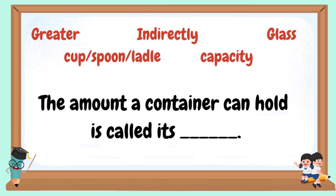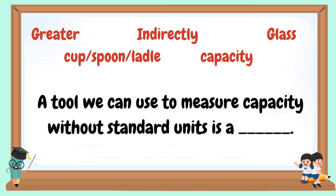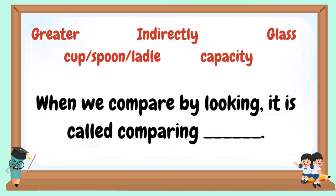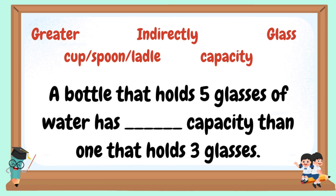Write the correct answer. The amount a container can hold is called its blank. A tool we can use to measure capacity with a non-standard unit is a blank. A big bucket can hold more water than a blank. When we compare by looking, it is called comparing blank. A bottle that holds five glasses of water has blank capacity than one that holds three glasses.